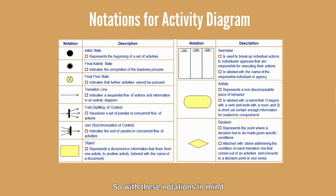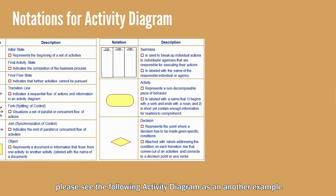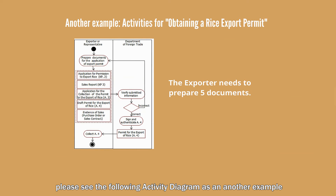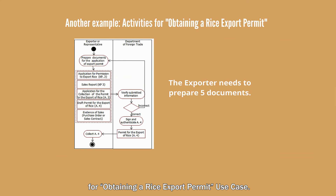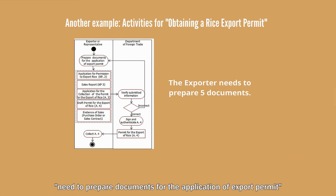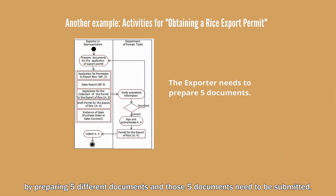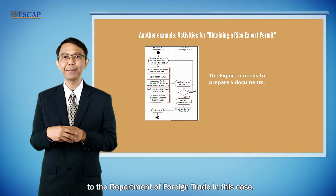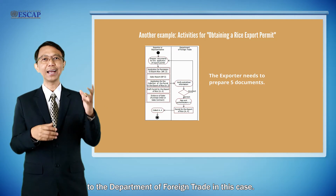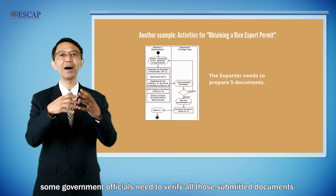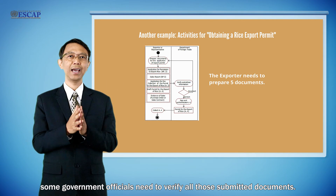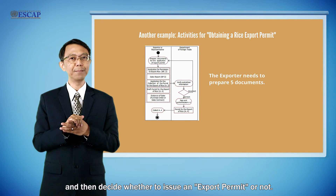The diamond shape symbol represents a decision point where a decision has to be made based on specific conditions. With these notations in mind, please see the following activity diagram as another example. This activity diagram shows the sequence of activities for obtaining a rice export permit. The diagram clearly illustrates that the exporter needs to prepare five different documents for the permit application, which are then submitted to the Department of Foreign Trade, where government officials verify all submitted documents and decide whether to issue an export permit or not.